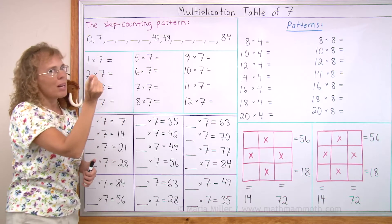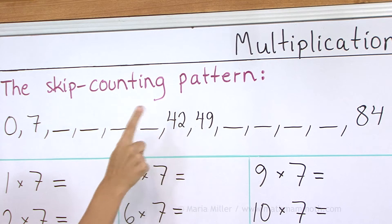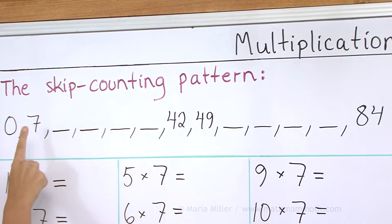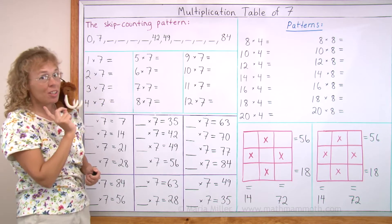And then backwards from 42, 35, 28, 21, 14, 7 and 0. Your turn, 42...